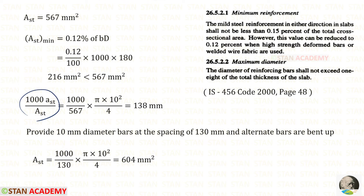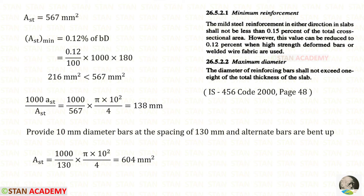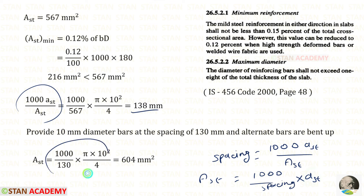Using the spacing formula with 10 millimeter diameter main reinforcement bars, the area of one bar is pi D squared upon 4, giving a spacing of 138 millimeter, which we round down to 130 millimeter. So we provide 10 millimeter diameter bars at spacing of 130 millimeter, with alternate bars bent up. The provided AST using the formula 1000 times small AST upon spacing gives 604 millimeter square.